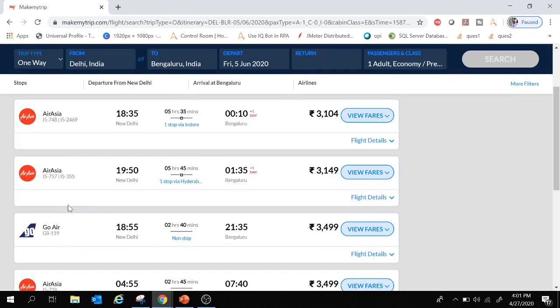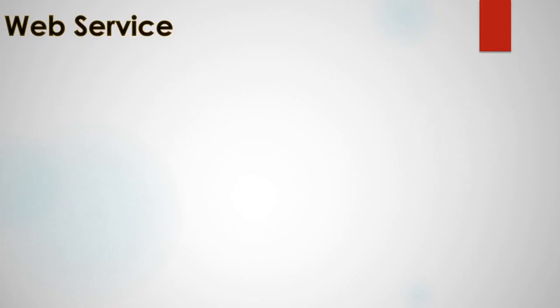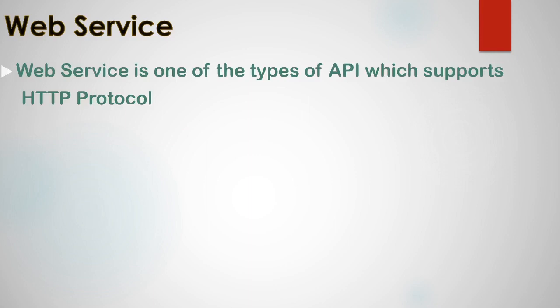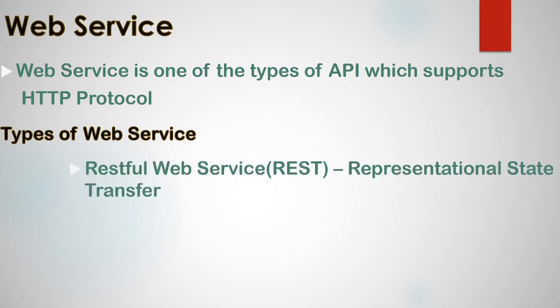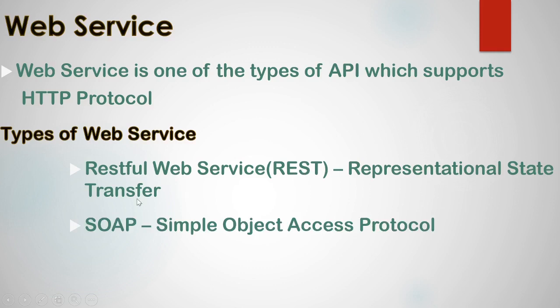Now that we're familiar with APIs, let's understand web services. There are several types of APIs, and web service is one type that supports the HTTP protocol. There are two types of web services: the first is RESTful web service, which uses REST (Representational State Transfer) as its architecture style, and the second is SOAP, which stands for Simple Object Access Protocol.